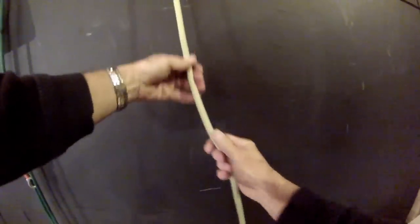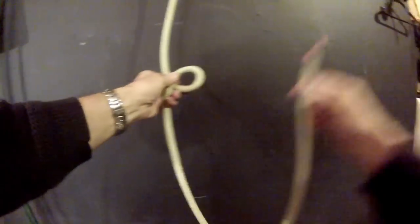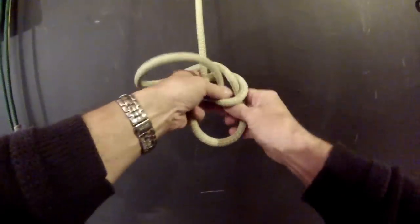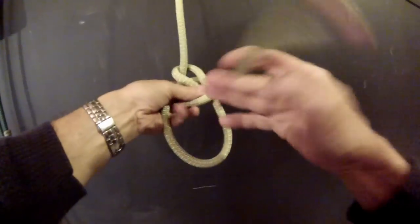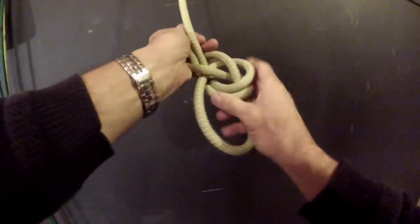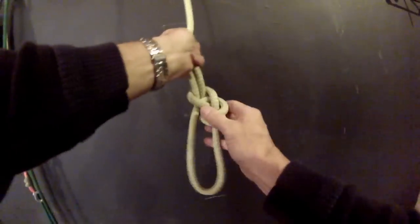One of the perceived solutions is to tie the Bowline with a Yosemite tie-off. Indeed, it makes the knot more secure and also changes the orientation of the tail.